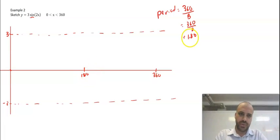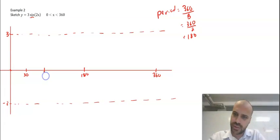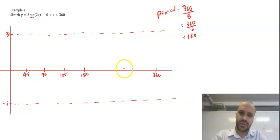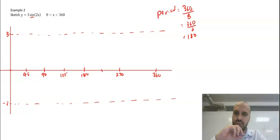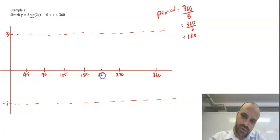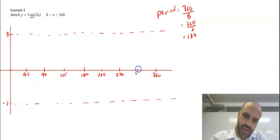Take the period, which is 180, and divide it into four segments. Half of 90 is 45. Halfway between 90 and 180 is 90 plus 45, which is 135. Halfway between 180 and 360 is 180 plus 90, which is 270. Halfway between 180 and 270 is 180 plus 45, which is 225. And halfway between 270 and 360 is 270 plus 45, which is 315.